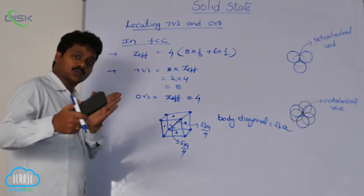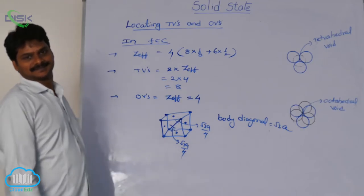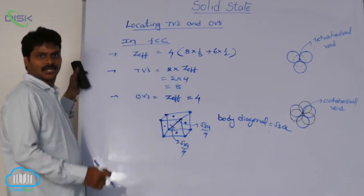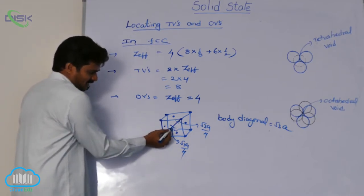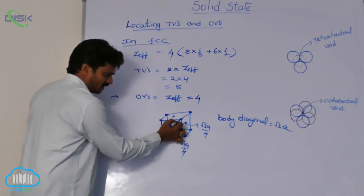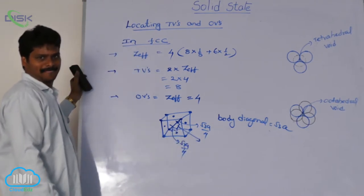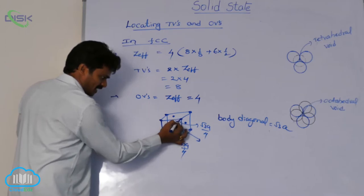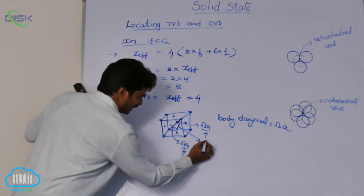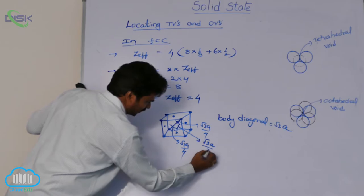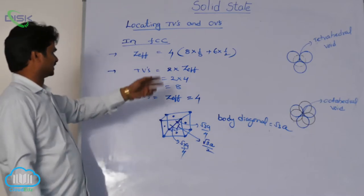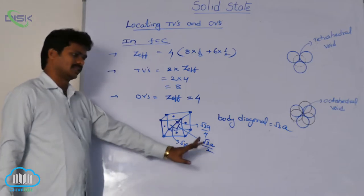The question is: what is the minimum distance between two tetrahedral voids? The total body diagonal length is root 3a. From one corner it is root 3a/4, and from the other corner also root 3a/4. So the distance between the two tetrahedral voids along the body diagonal is root 3a - root 3a/4 - root 3a/4 = root 3a/2.